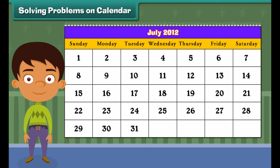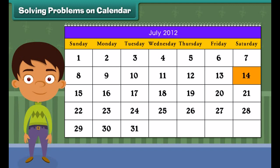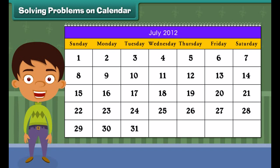Solving Problems on Calendar. Do you know that a calendar solves many problems? You can easily read the days and dates on a calendar. Let us look at the month of July for the year 2012. Can you tell on which day does this month end? Yes, it's Tuesday. What day is it on 13th July? It is Friday. What is the date on the second Saturday? It is 14th July.